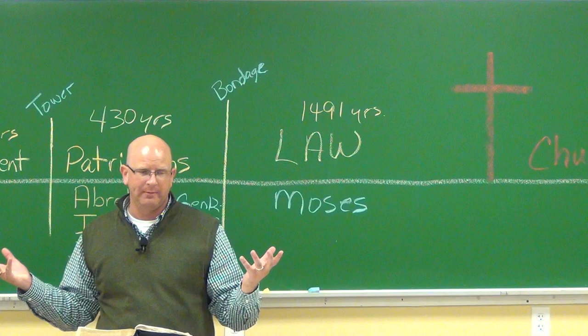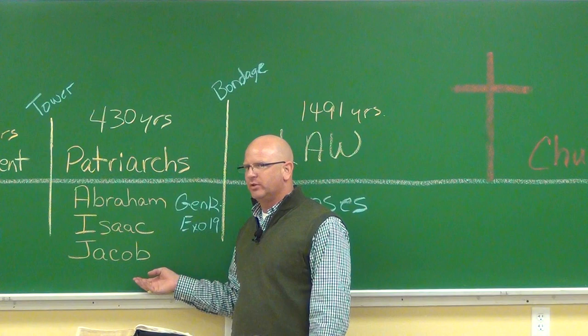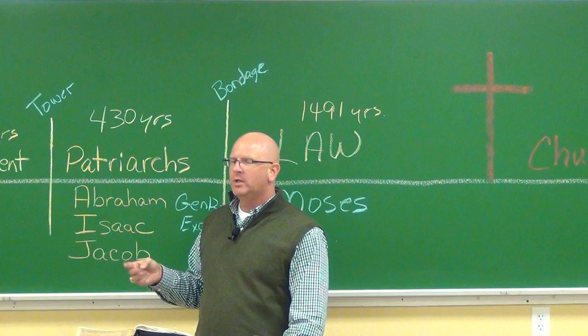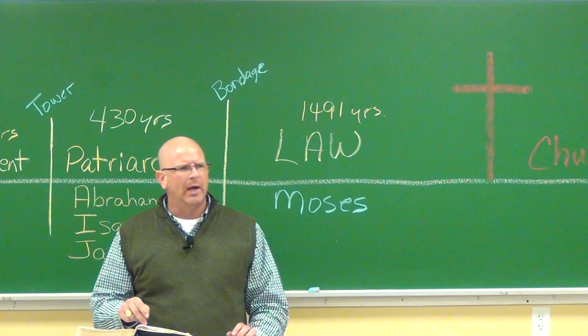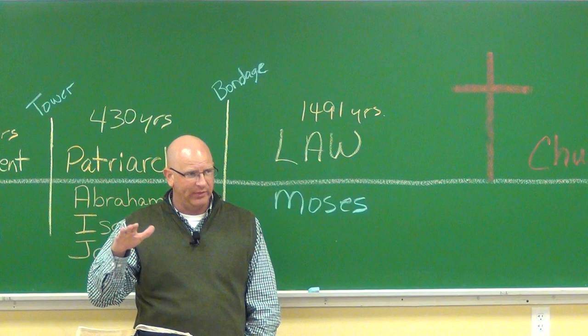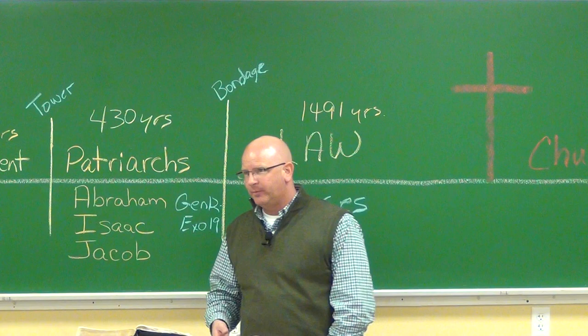This is a picture — a type. One of the greatest types of the Lord Jesus Christ is the story of Joseph. Joseph was betrayed by his brother Judah; Jesus was betrayed by a fellow named Judas. All the similarities are involved here. Joseph went into the pit — sold into slavery for nothing. He didn't do anything wrong, but he was thrown into the pit.